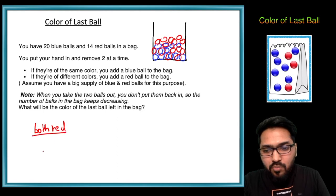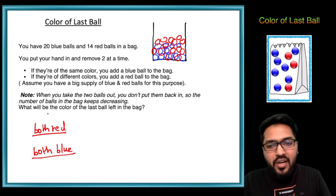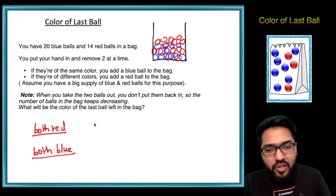It is said that if they are of the same color, both can be red or both can be blue. Let's see - if both red balls come out then we're adding one blue ball from our side, so effectively I can say two red out, one blue in.